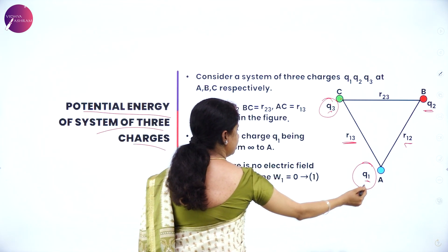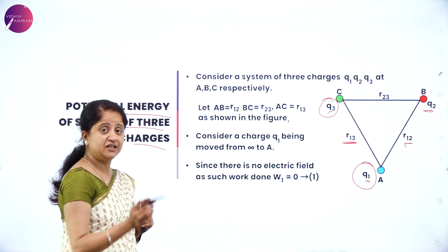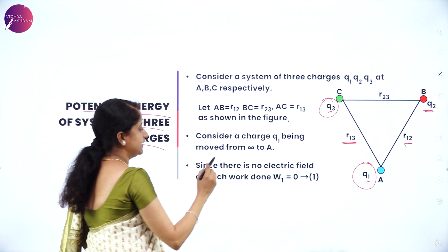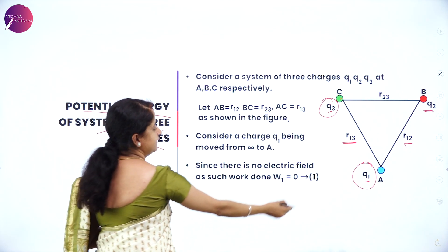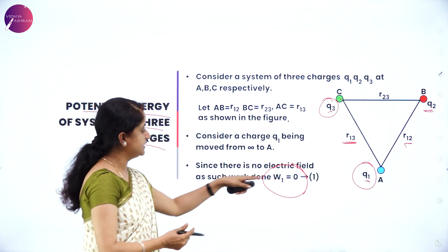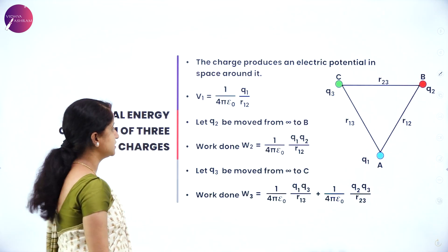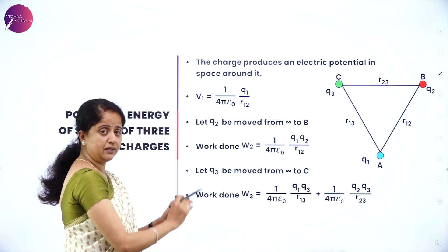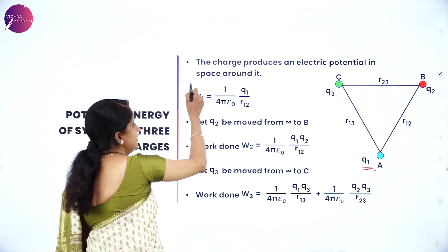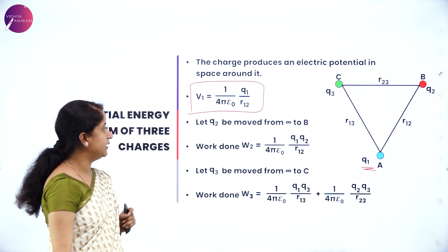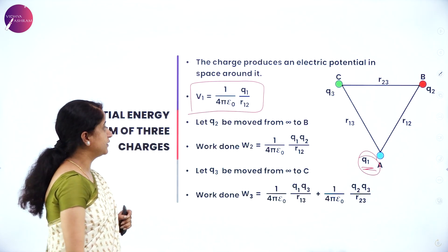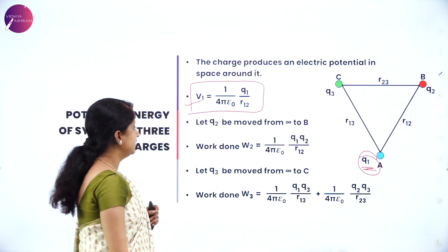Now I bring charge Q1 from infinity to point A. Initially there was no electric field, so the work done in bringing Q1 from infinity to A is W1 = 0. This charge Q1 then produces an electric potential given by V1 = (1/4πε₀) Q1/R12.